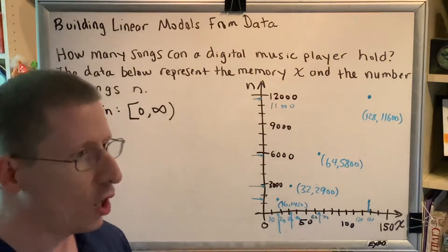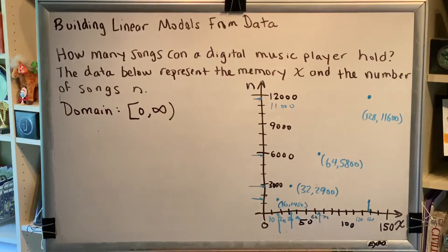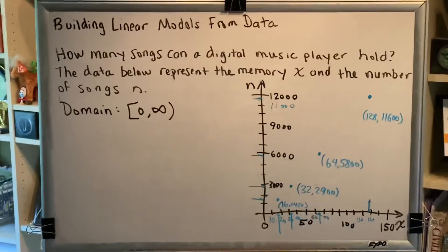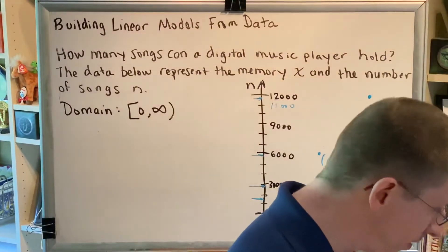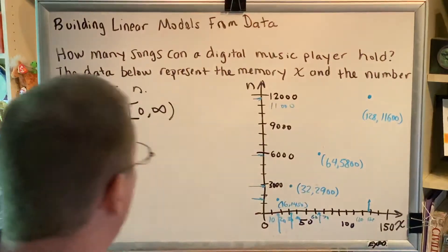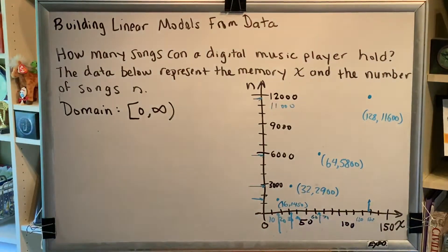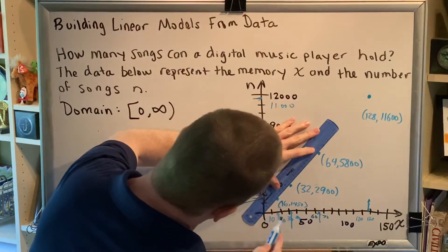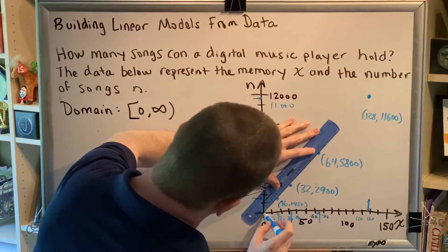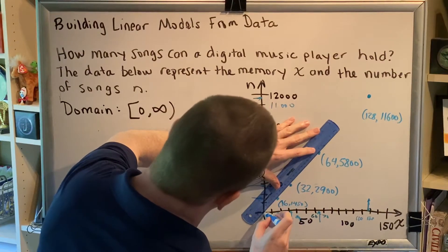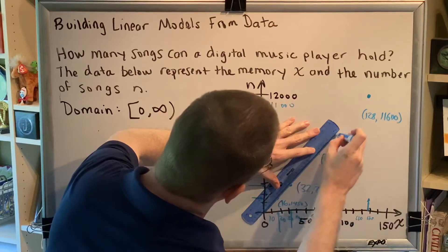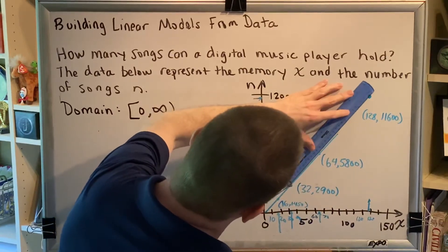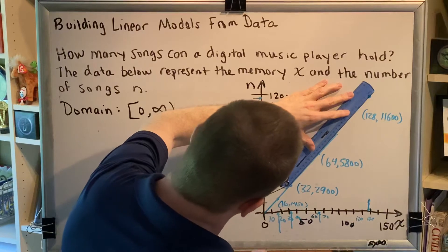That brings us to part e. Graph the linear function in the cartesian plane drawn in part a. So that's actually very easy to do. We know it's linear. We've already got the dots. We just have to connect them. So we're going to connect the dots. So get out your straight edge. Remember that lines, line segments, and rays must be drawn with a straight edge.